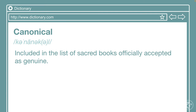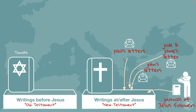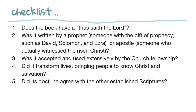The canonical is the other side of the spectrum — what has been without question divinely inspired. These are people that have directly heard the words from Jesus. In this group we find Paul's letters, Jude, James, John's letters, and the journals of Jesus' followers. The criteria include: does the book contain 'thus saith the Lord'? Was it written by a prophet or someone with the gift of prophecy — such as David, Solomon, or Ezra — or an apostle who witnessed the risen Christ? Was it accepted and used extensively in church fellowship? Did it transform lives and bring people to knowing Christ? And does it agree with other established scriptures? Those are the five main things to look at.